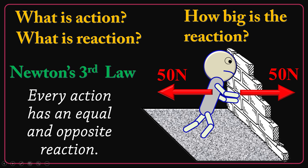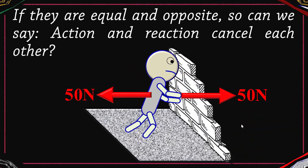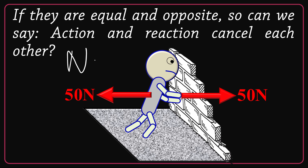Equal in magnitude and opposite in direction. If they are equal and opposite, can we say action and reaction cancel each other? The answer is a big no. They don't. The reason is that they are acting on different objects. You are pushing the wall and the wall is pushing you back. 50 newtons rightward is acted on the wall and 50 newtons leftward is acted on you. They can't cancel each other. It's impossible. It's very wrong to say action and reaction cancel each other — they won't.